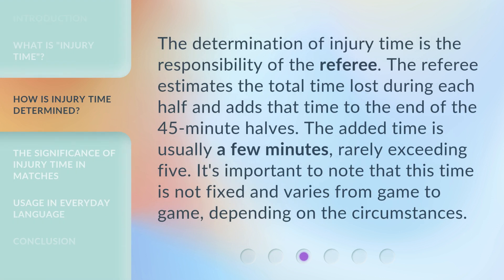The determination of injury time is the responsibility of the referee. The referee estimates the total time lost during each half and adds that time to the end of the 45-minute halves. The added time is usually a few minutes, rarely exceeding 5. It's important to note that this time is not fixed and varies from game to game, depending on the circumstances.